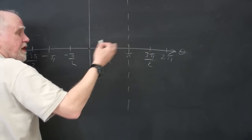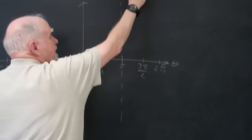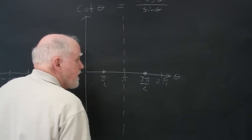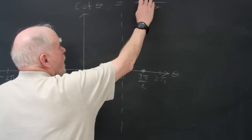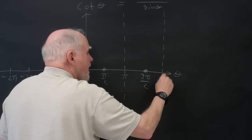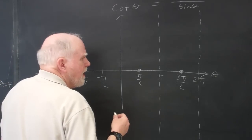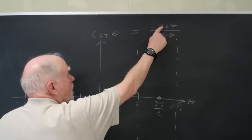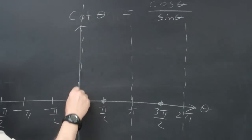It's the same kind of thing, just in different places. At three pi over two, the cosine is zero and the sine is negative one, so that's zero over negative one — a zero point. At two pi, the cosine is one but the sine is zero, so it's undefined, giving a vertical asymptote. At zero, the sine is zero and the cosine is one, so it's undefined — causing a vertical asymptote.